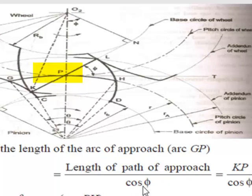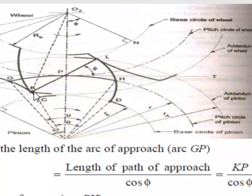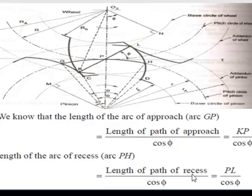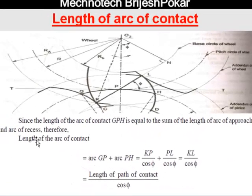The length of path of approach is equal to KP upon cos φ. Similarly, the length of arc of recess is equal to the length of path of recess, which is PL upon cos φ.